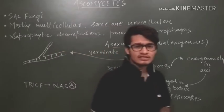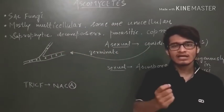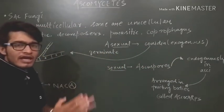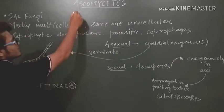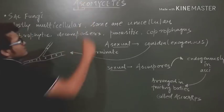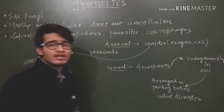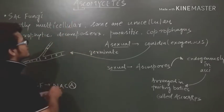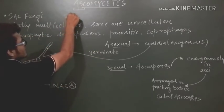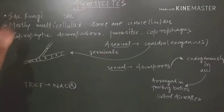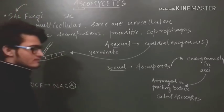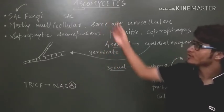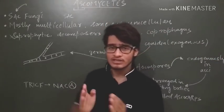Now the Ascomycetes are also known as Sac-Fungi. So what is the simple trick to memorize this? Just rearrange the initial three letters of Ascomycetes - A-S-C, rearrange them and it becomes SAC, which is Sac-Fungi. So there will be no confusion at all that the members of Ascomycetes are known as Sac-Fungi.